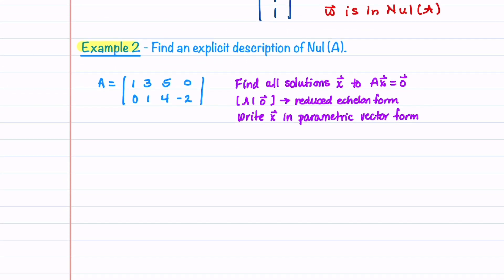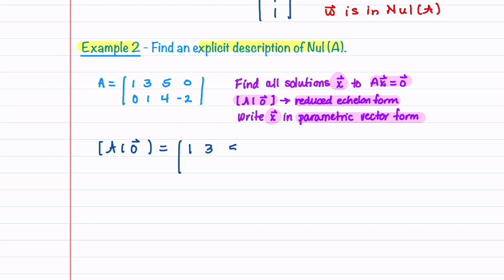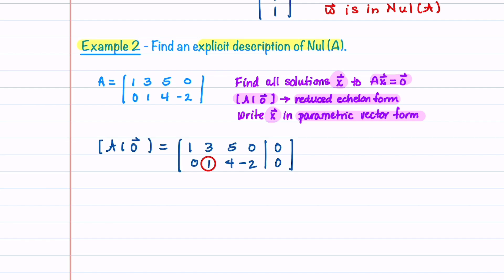In our second example, we're asked to find an explicit description for the null space of A. To do this, we need to find all solutions x to Ax = 0. We'll augment A with the zero vector and put it in reduced echelon form, then write x in parametric vector form. The augmented matrix A|0 is already in echelon form, so we just need to put it in reduced echelon form. We circle our pivot and get a zero above it, giving us our reduced echelon form matrix.